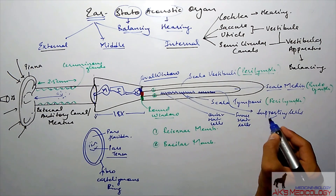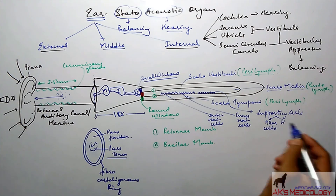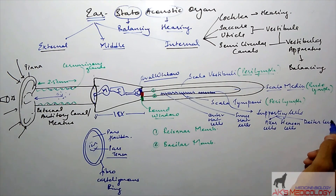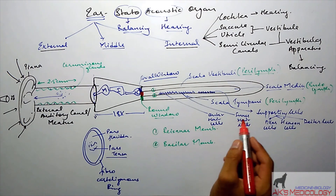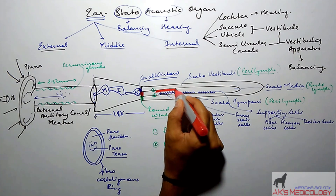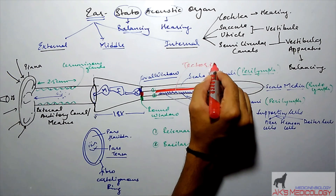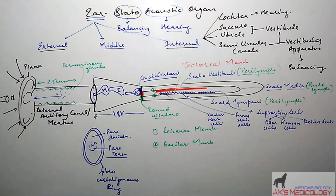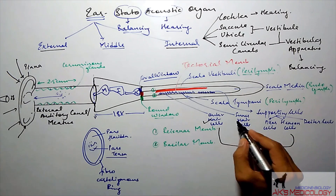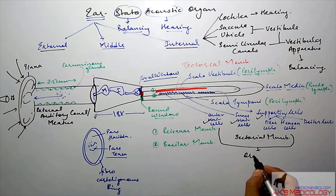The organ of Corti also contains supporting cells, whose names can be remembered using the mnemonic PHD: P stands for Pillar cells, H stands for Hensen cells, and D stands for Deiters cells. Besides the outer hair cells, inner hair cells, and supporting cells, there is another important structure in the scala media: the tectorial membrane. So the organ of Corti comprises outer hair cells, inner hair cells, supporting cells, and the tectorial membrane.